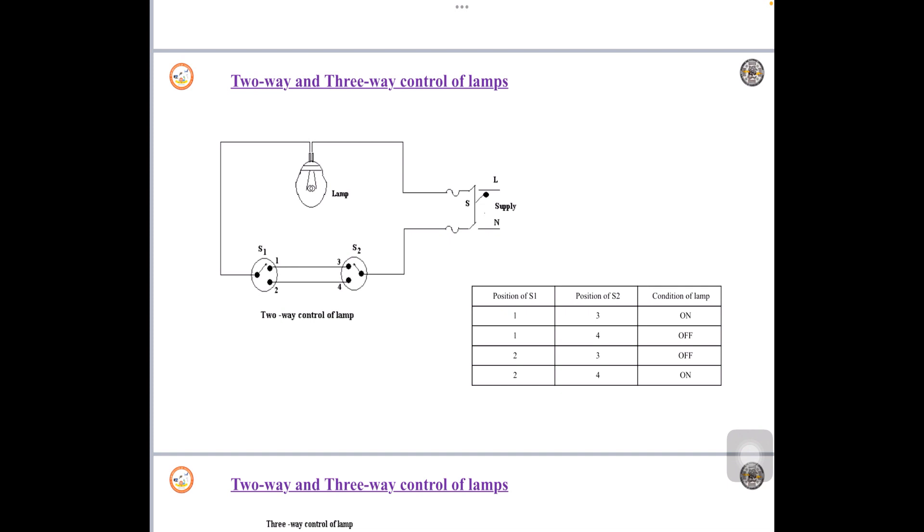Similarly, the next condition is S1 to 1, but instead the position of S2 is changed from 3 to 4. Now there is no continuity from 1 to 4, so it is discontinued. There is no connection from 1 to 4. So it will not become a closed circuit, the condition of the lamp is off.